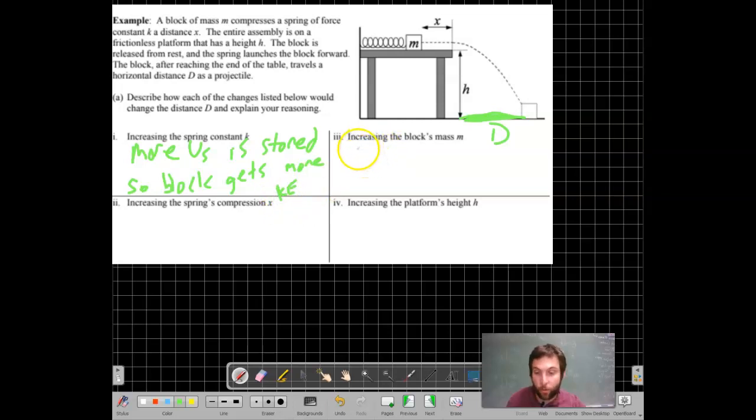And what's that going to do? Well, if you have more kinetic energy, that means you're going faster. And if you're going faster when you leave as a projectile, you're going farther. So this answer is going to be a larger distance, or a larger capital D.